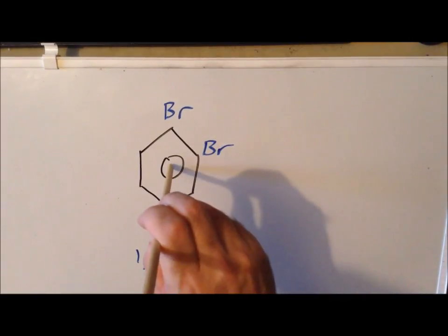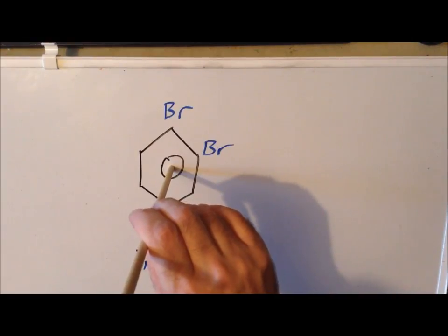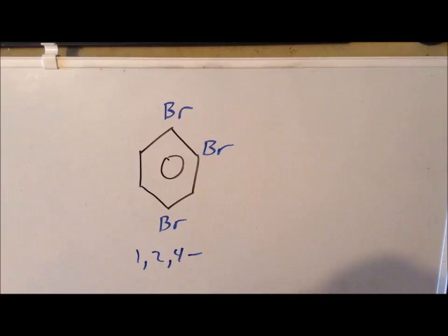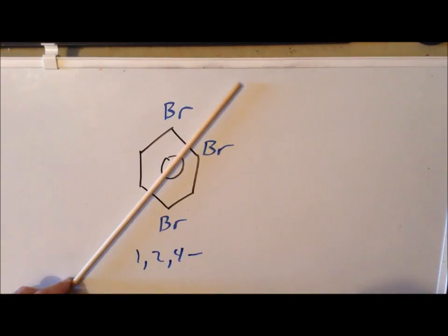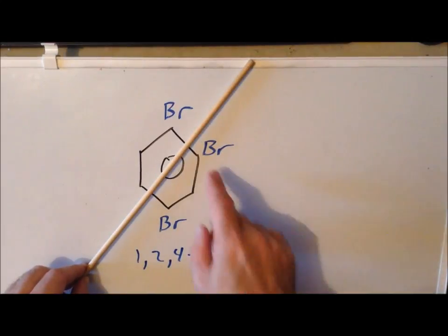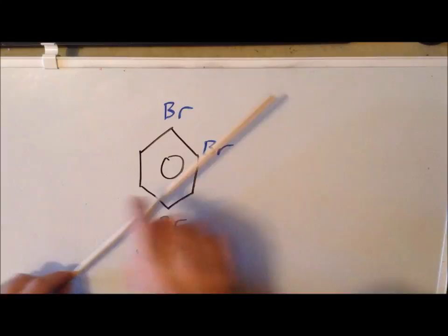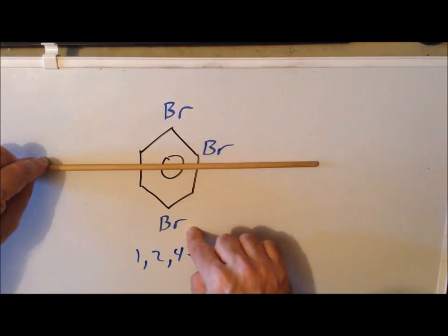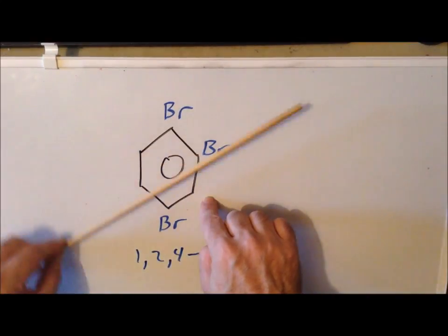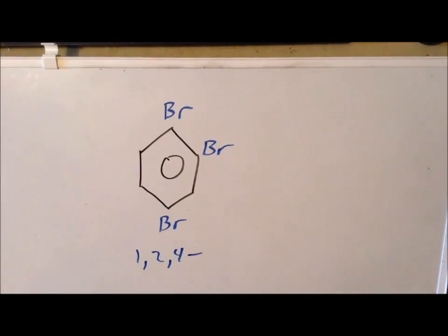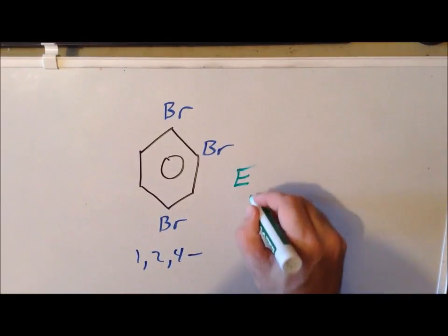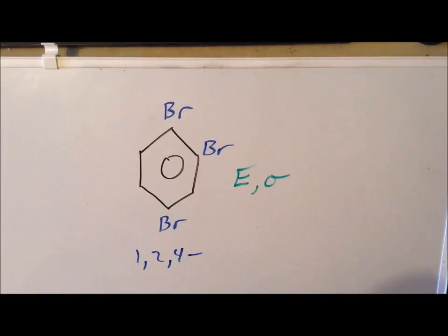If I look for a high-order rotation axis perpendicular to the plane of the board, I notice I only have the identity. Let's try a C2 in the plane of the board: if I try it here, it takes bromine into bromine but bromine into hydrogen, so that doesn't work. No matter how I arrange such a C2, there are no C2s. For this tri-substitution pattern, the only symmetry elements are the identity and a mirror — so we've reduced the symmetry to the point group Cs.